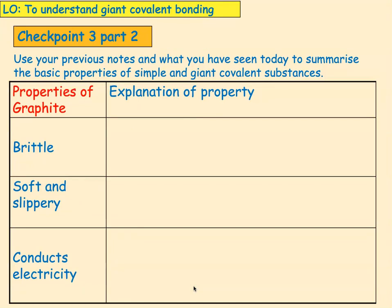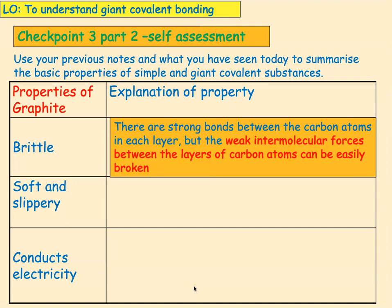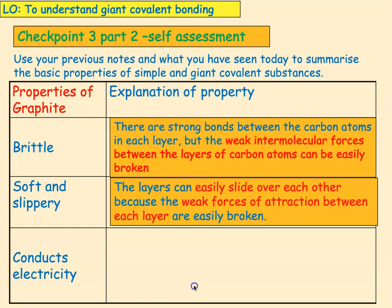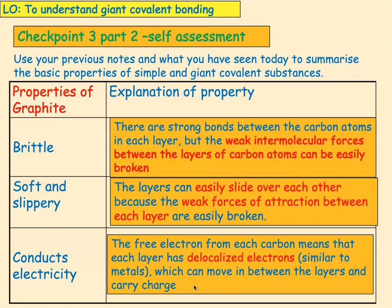Now we're going to do the same thing with graphite. Pause the video, sketch your table, and come back when you've answered the question. Graphite is brittle because it has strong bonds between the carbon atoms in each layer but weak intermolecular forces between the layers, which can be easily broken. It's soft and slippery because the layers can easily slide over each other due to those weak forces of attraction between the layers. It conducts electricity because it has a free delocalised electron — not involved in covalent bonding — which can move between the layers and carry a charge.